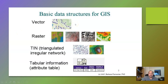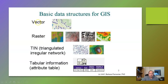The two main data structures are vector and raster, which we'll talk about next week. The big difference between the two is how we're trying to represent things — vector is much better for simple, discrete data, while raster is much better for continuous data like slope.